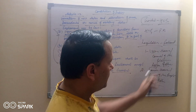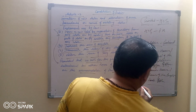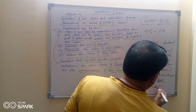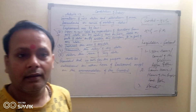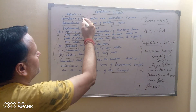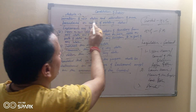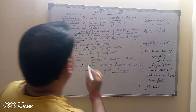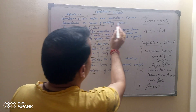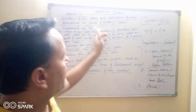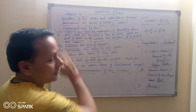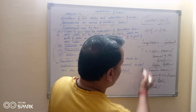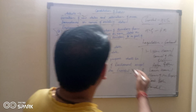Parliament includes Rajya Sabha, House of the People, and President of India. So Parliament will be — this is why President's consent is required. State is part of it.